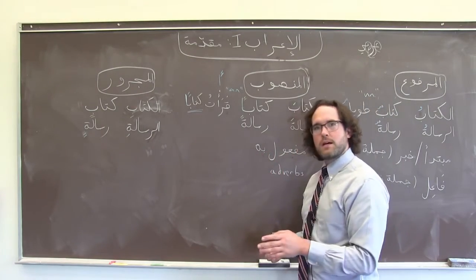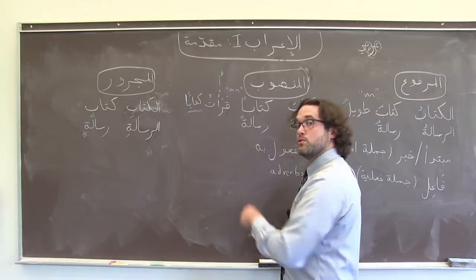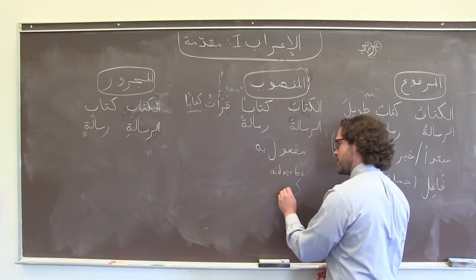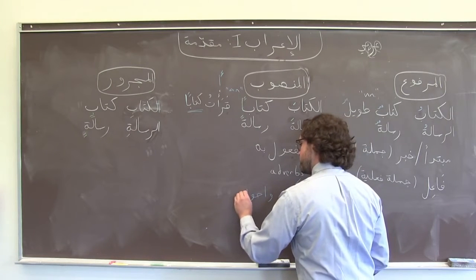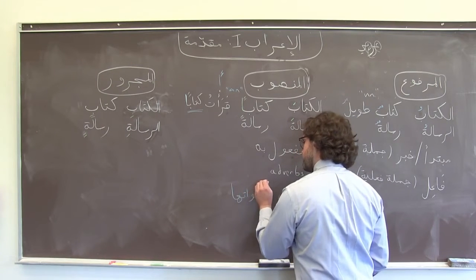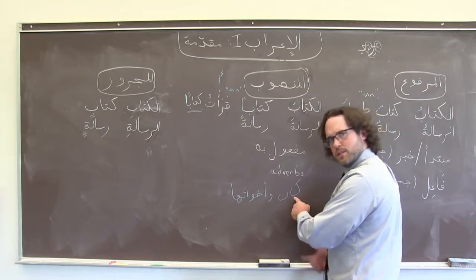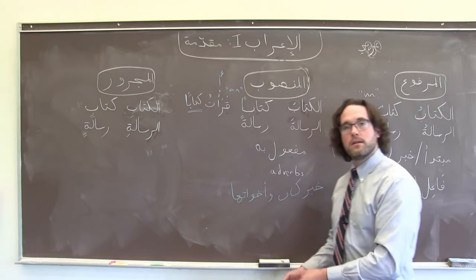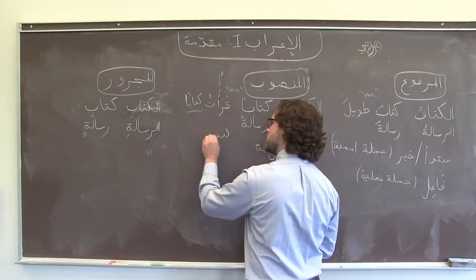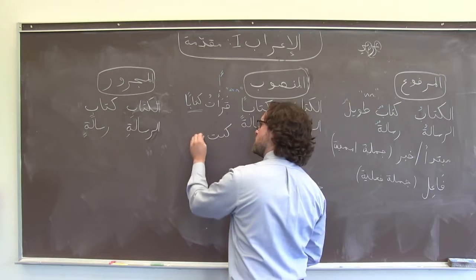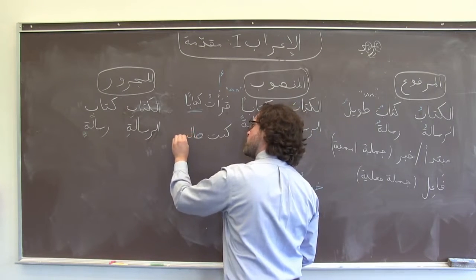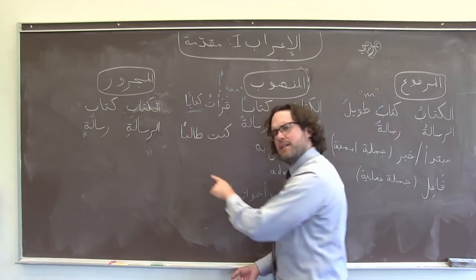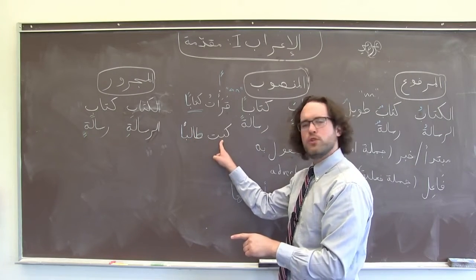Similarly, we're also going to see منصوب on the direct object of كَانَ and its sisters — كَانَ وَأَخَوَاتِهَا. There's a separate video on that. So if كَانَ or one of its sister verbs has a direct object, the خبر is going to be منصوب. If I want to say 'I was a student,' I would say كُنْتُ طَالِبًا, where the منصوب ending marks طالب as the object of كَانَ.